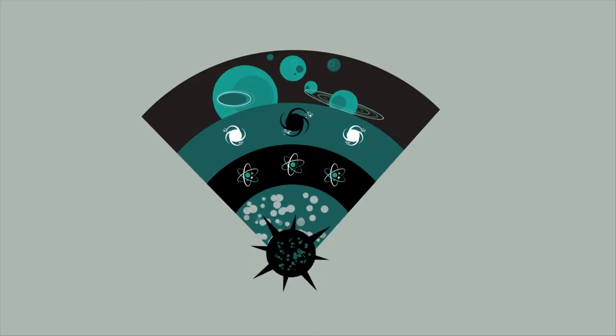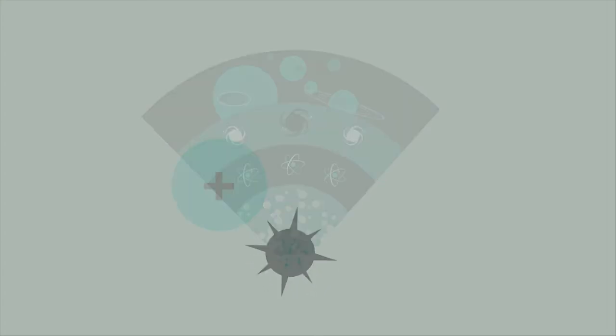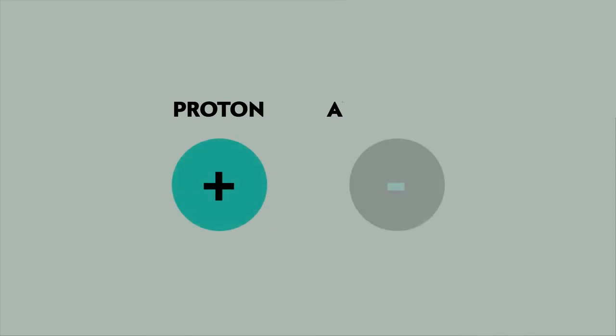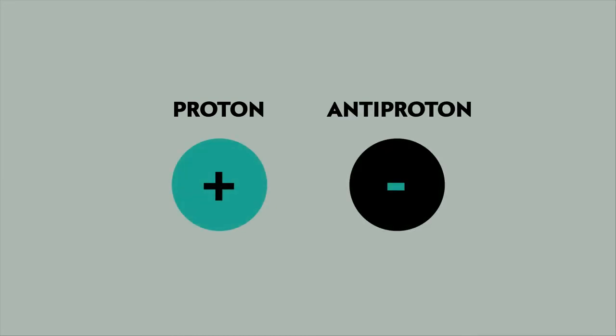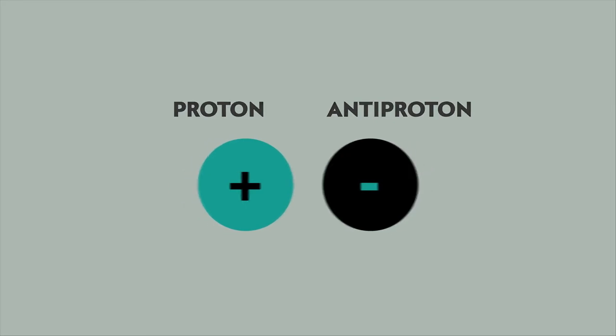Physicists don't yet understand how we came to exist. The Big Bang should have generated equal amounts of matter and antimatter, which are twins but with an opposite charge. Put the two together and both are annihilated.